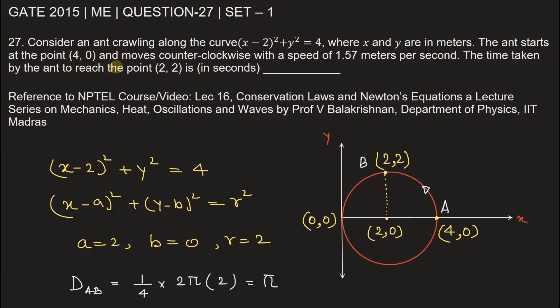The time taken by the ant to reach from point (4, 0) to point (2, 2) is 2 seconds.